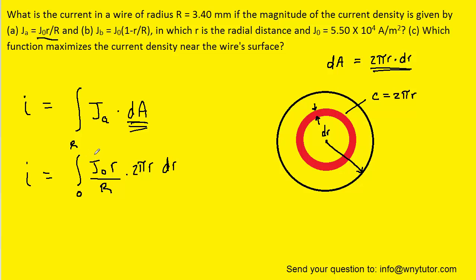Now of course we have some constants that we can remove from the integral. We have the J0 over capital R as well as the 2π. And note that capital R was a constant because that represents the radius of the wire. And of course that radius is not changing.